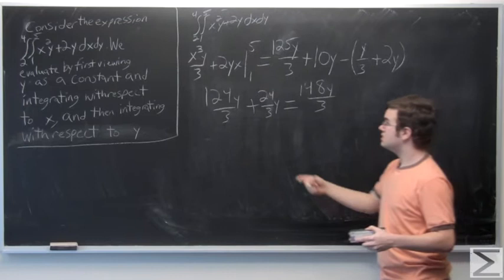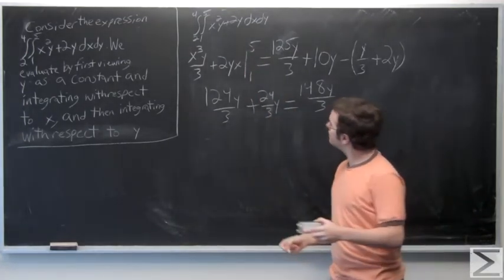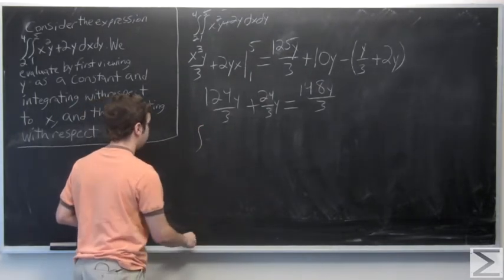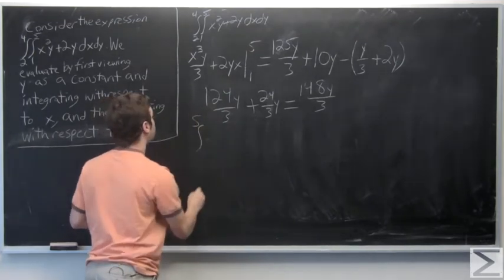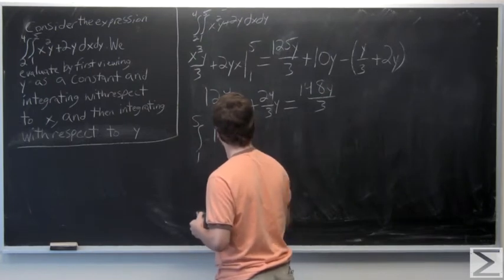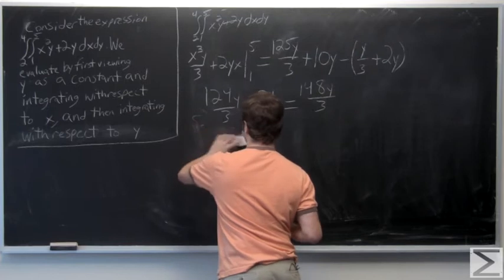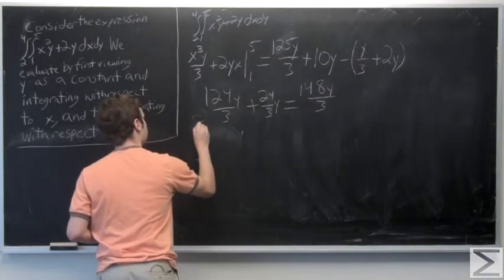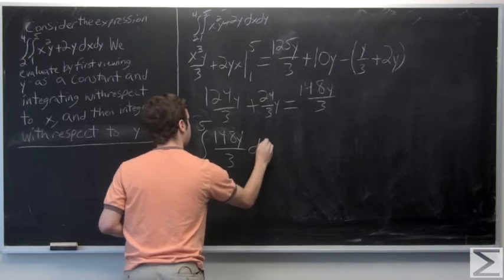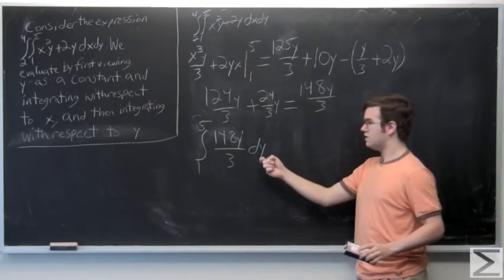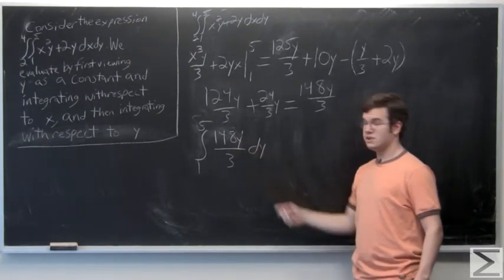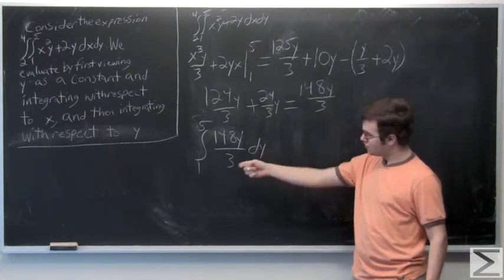And now we could substitute this for the inner integral. So if we're doing this for the inner integral, and this here is a very simple definite integral problem. The integral of 148y over 3, integrating with respect to y from 1 to 5.